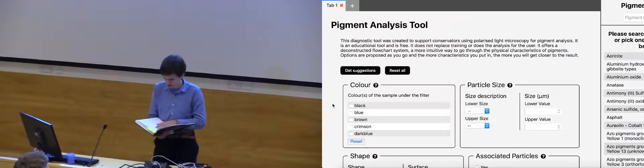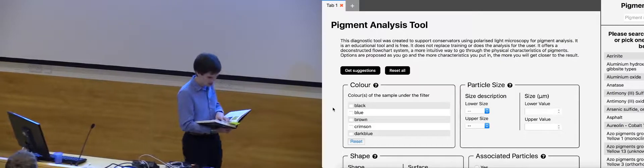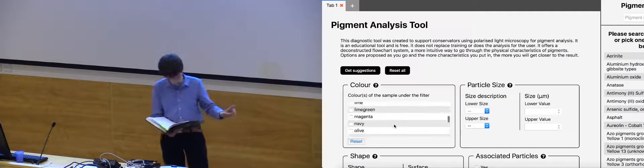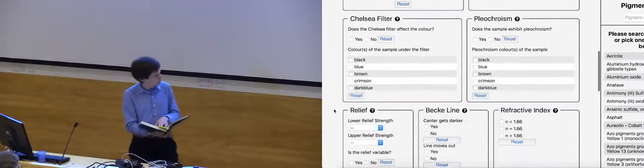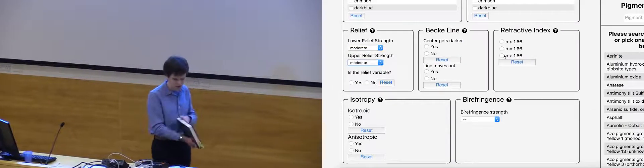Entering up the characteristics into our programme. In plain polarised light, cobalt tin oxide, cerulean blue, forms translucent turquoise blue grains with moderate relief and a refractive index greater than that of the medium.